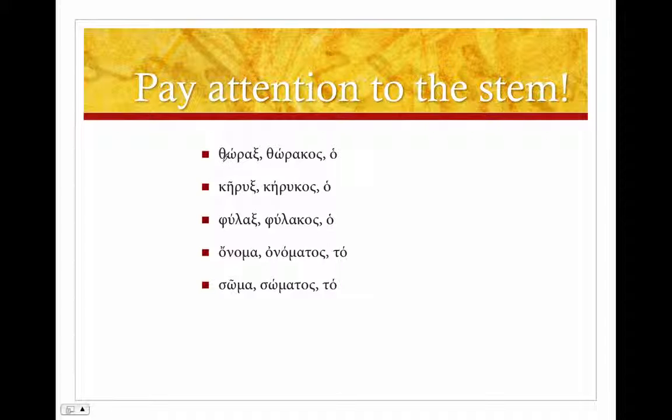So how do we find the stem? Well we find it from the second principal part, and remember this is the genitive singular. So to find the stem, we're going to knock off the ending, the -os, so the -os is the genitive singular ending.